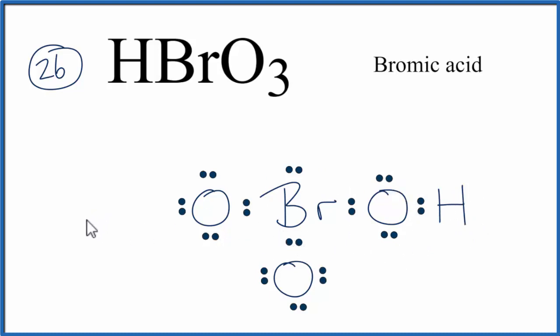if we calculate the formal charges, we'll find that this isn't the most likely structure for HBrO3. Each of these oxygens here would have a formal charge of minus 1. This oxygen would be 0, and the hydrogen would have a formal charge of 0. But this bromine in the center, that would have a formal charge of plus 2. So we'd like these to be as close to 0 as possible.